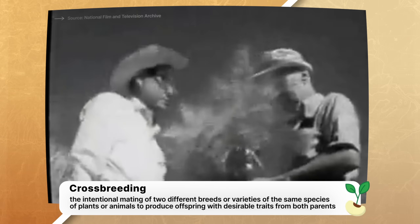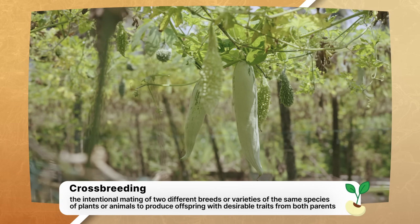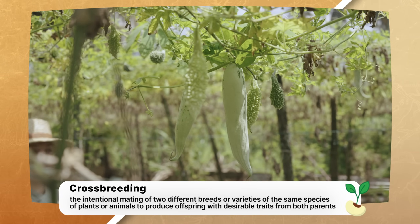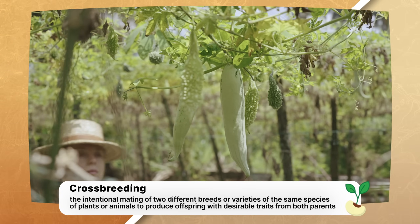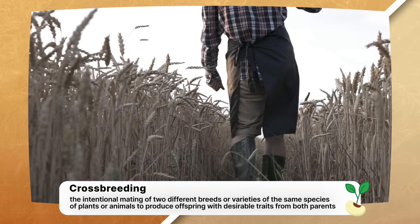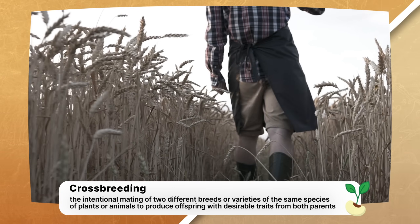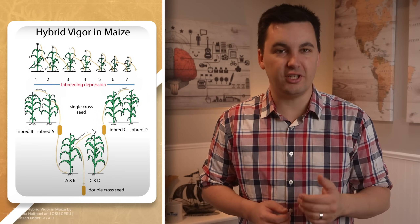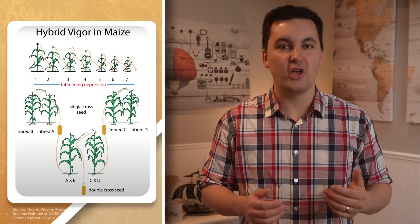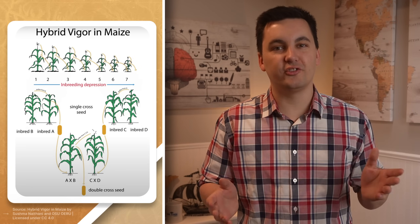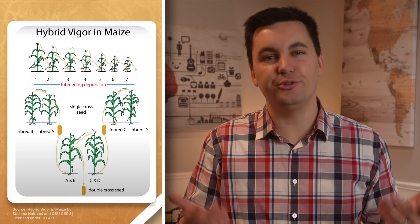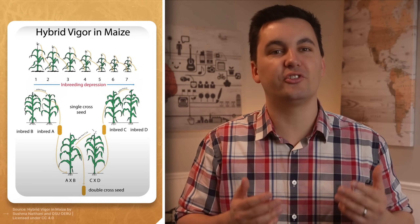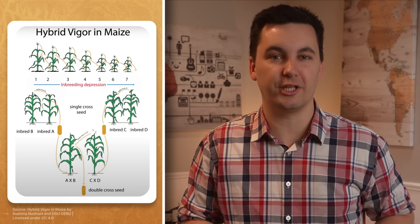To get high-yield seeds, individuals such as Dr. Borlaug used crossbreeding. This is when different species of plants are mixed to produce a new variant that has the best genetic characteristics of both. For seeds, this often results in hybrid seeds that have shorter growing seasons and are more resistant to different climates. But ultimately, it's up to the scientist who is doing the crossbreeding.